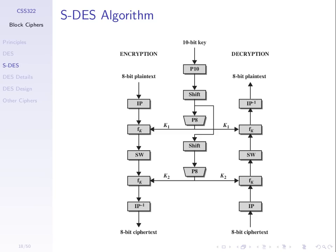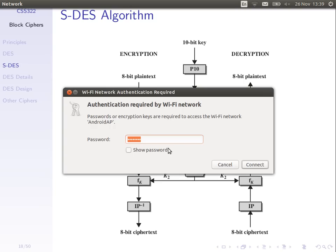IP is the initial permutation. P10 and P8 are different permutations. SW (switch or swap) is also a permutation — it takes 8 bits and swaps the halves, putting the first 4 bits last and the last 4 bits first. A shift is a left shift — again a permutation. Take the bits, shift them all to the left, and wrap the first bit around to the end, similar to a Caesar cipher.